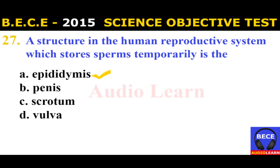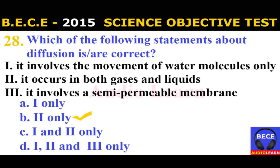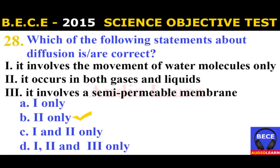Number 27: A structure in the human reproductive system which stores sperms temporarily is the A. Epididymis, B. Penis, C. Scrotum, D. Vulva. The answer is A. Epididymis. The structure which stores sperms temporarily is the epididymis.